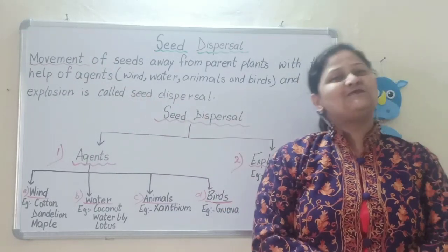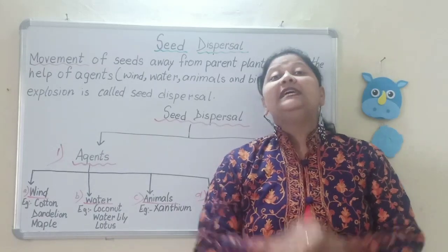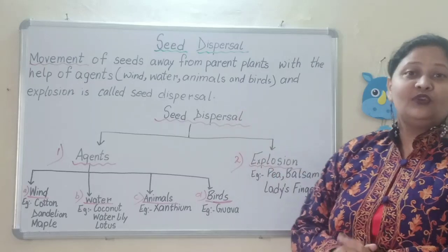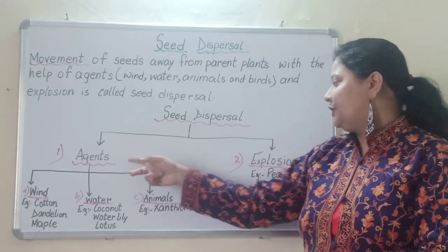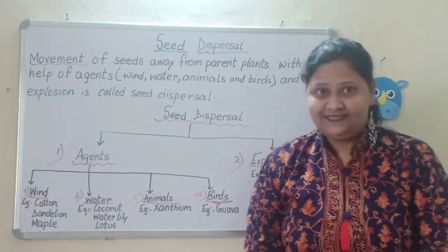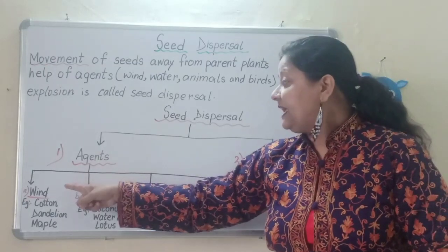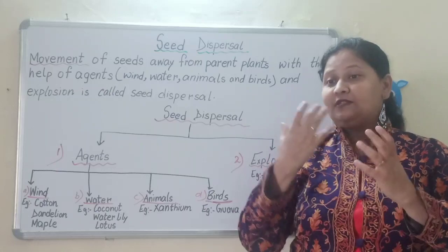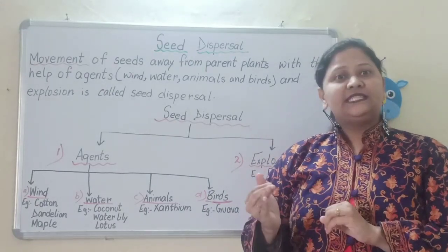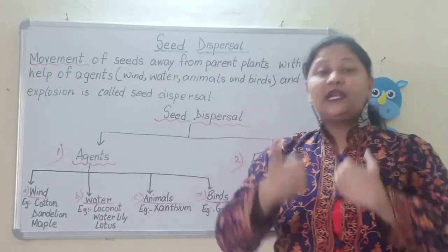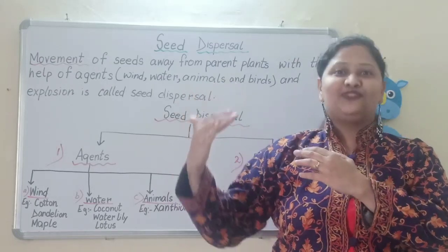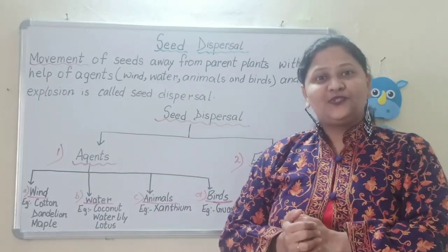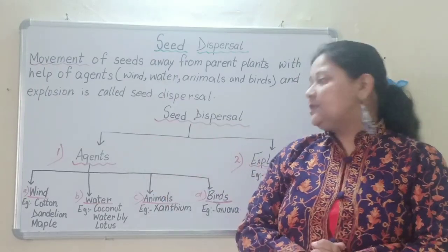There are two ways by which seeds can be dispersed — through agents, which we will be studying today, and by the process known as explosion. When we talk about agents, they are actually the medium — just like for transport we need various means, like land transport or air transport. Likewise, when we are talking about agents for seed dispersal, they are also the medium.